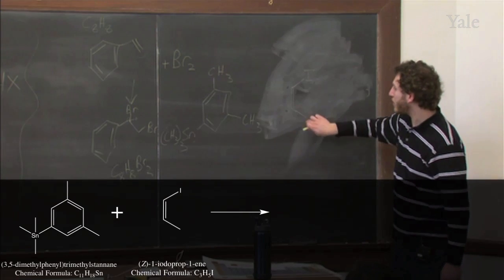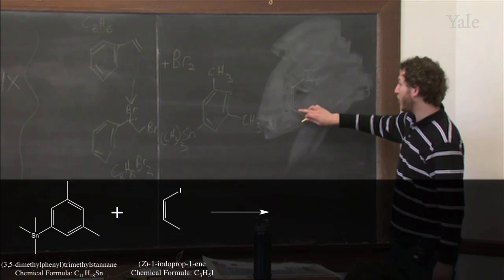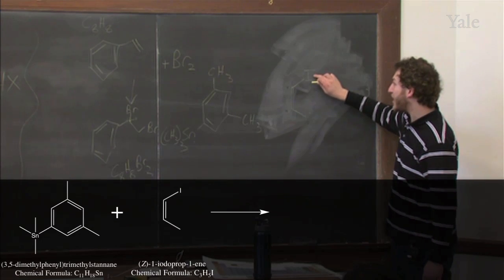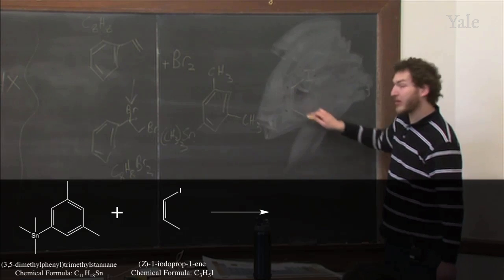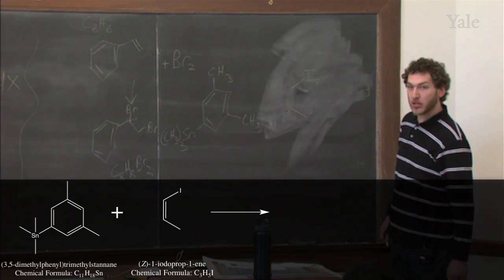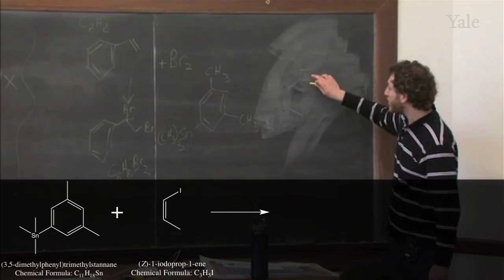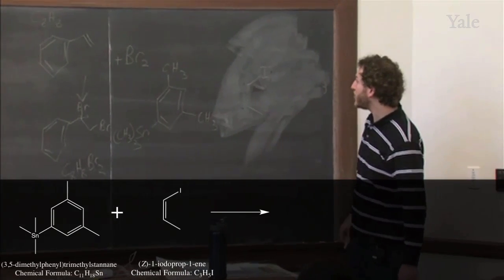Prop, because you have three carbons. En, because you have this double bond. And one, because the iodine is on the first carbon in the double bond. It's also the Z isomer, because the iodine and the methyl group are close to each other.